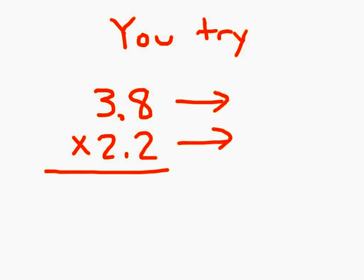Here's a problem for you to try. Go ahead and estimate the product for 3.8 times 2.2. Estimate to the nearest whole number. Press pause as you work. Did you round 3 and 8 tenths to 4? Rounding 2 and 2 tenths to 2. And 4 times 2 is 8. That is the estimated product.